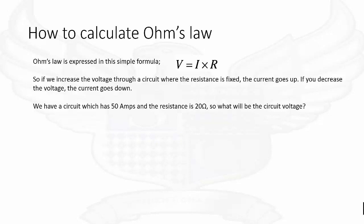Ohm's Law is expressed in this simple formula: V equals I times R. V stands for voltage, I stands for current, and R stands for resistance.